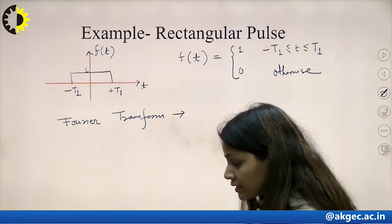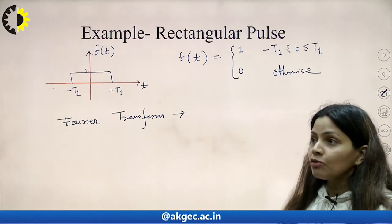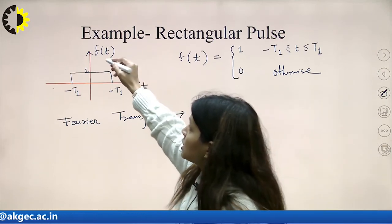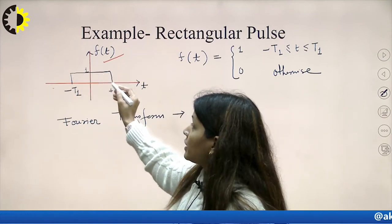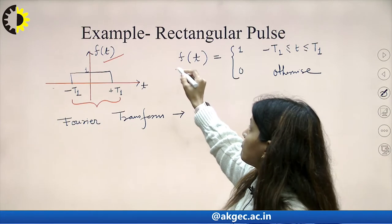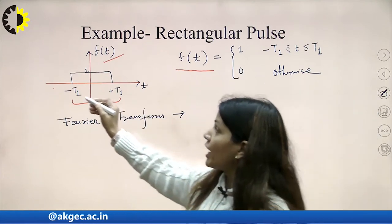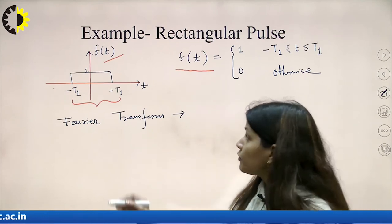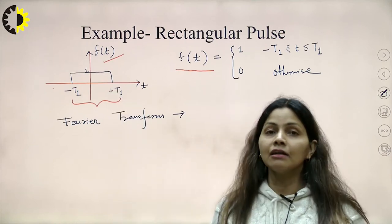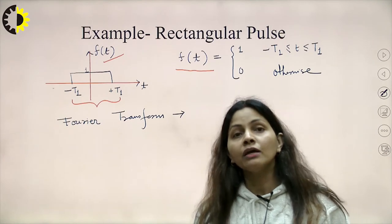Let us take a very important signal frequently used in filter applications — the rectangular signal. The signal f(t) has magnitude 1 from the time limit −T₁ to +T₁. So f(t) is defined as 1 from −T₁ to +T₁; otherwise the value of the signal is 0.